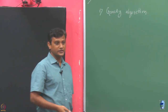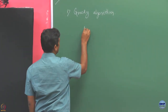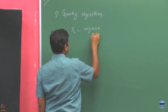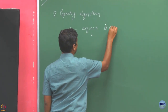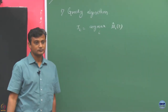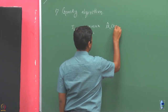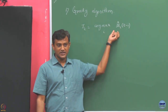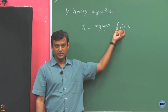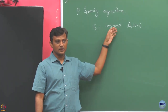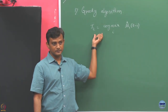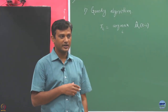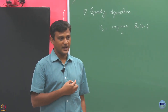What is the greedy algorithm going to do? It is going to simply play an arm i_t which is argmax over i of the estimates you have for each arm till round t minus 1. Just play the one which has the highest mean value. And we said that this is going to be a bad thing if you are going to just select the arms greedily.